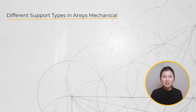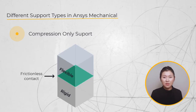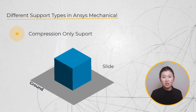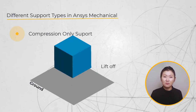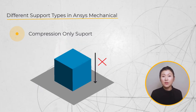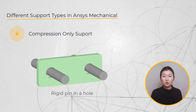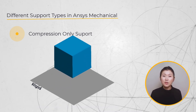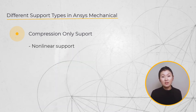The compression-only support can be thought of as frictionless contact with a rigid object that is not modeled. The body is free to slide in the tangential direction and free to lift off in the negative normal direction, but cannot move in the positive normal direction. This support is useful to model a rigid pin in a hole in large deflection analysis, or something resting on a stiffer part. Note that this is a non-linear support, so it requires extra computation.